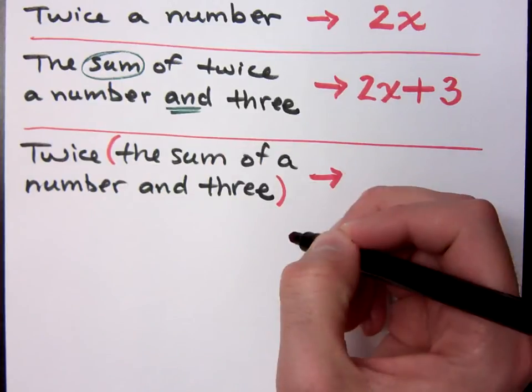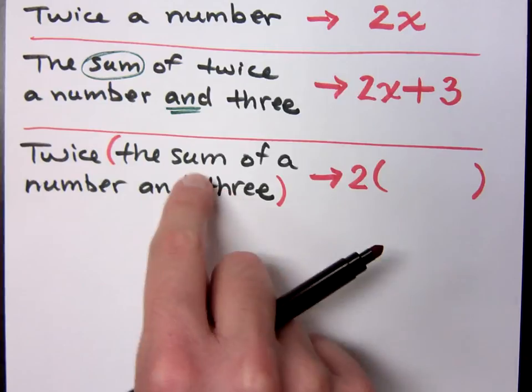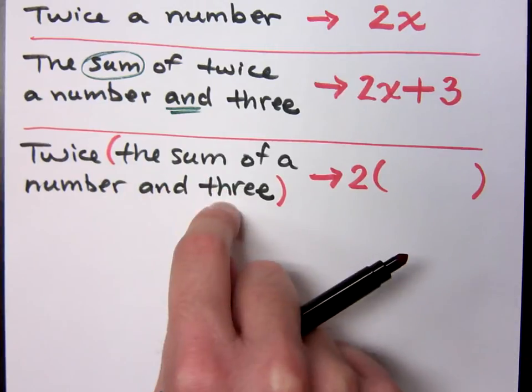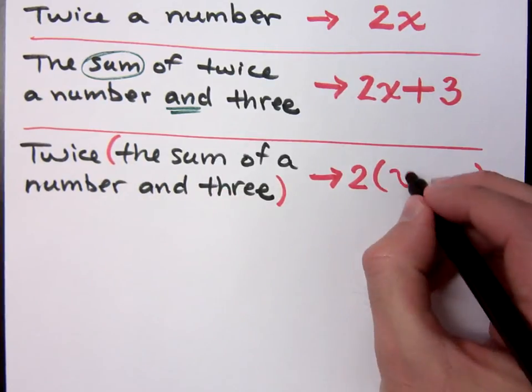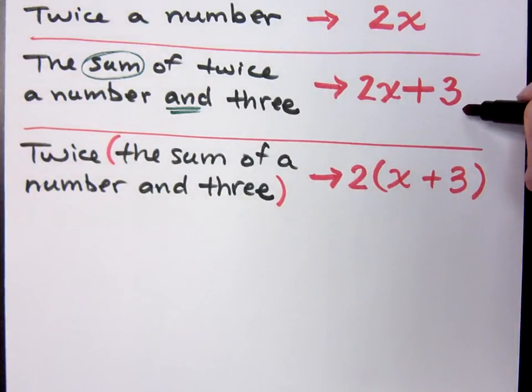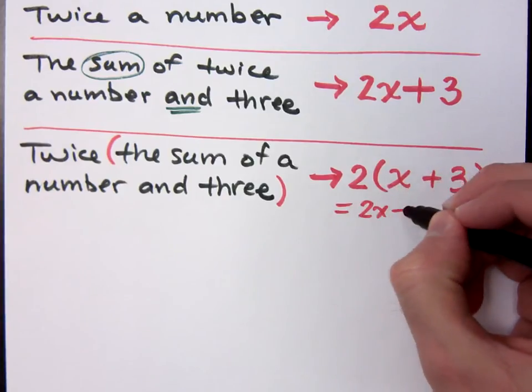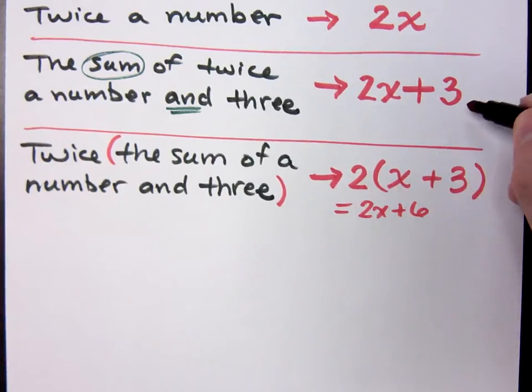So it would be 2 times the x plus 3. It's going to be twice this guy right here. So that means 2 times the group. And how would you write the sum of a number in 3? x plus 3. x plus 3. Are these guys the same? No. No. If you had distributed this, you would have 2x plus 6, which is definitely not the same as that guy.